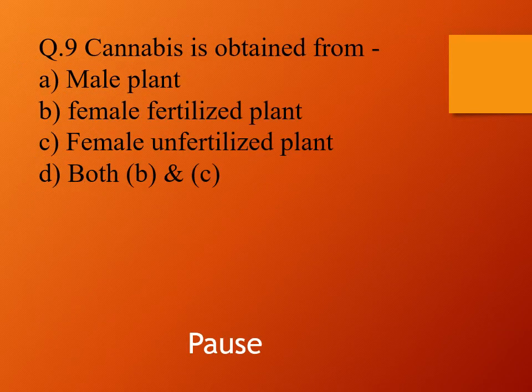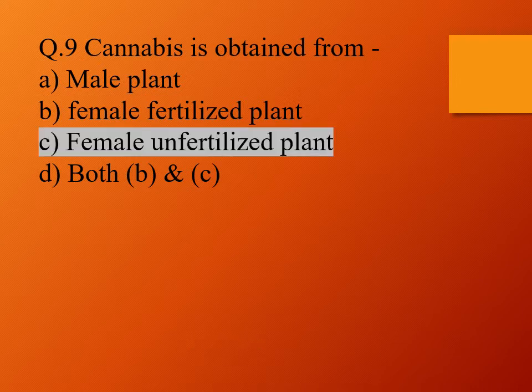Question 9. Cannabis is obtained from: option A, male fern; option B, female fertilized plant; option C, female unfertilized plant; and option D, both B and C. The right answer is option C, female unfertilized plant. So cannabis is obtained from the female unfertilized plant — a most important MCQ.